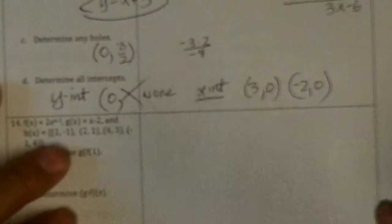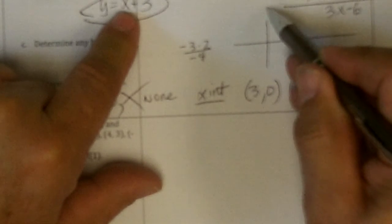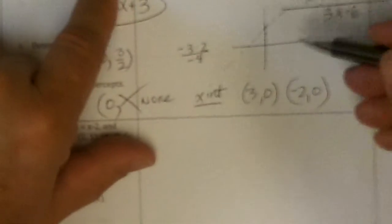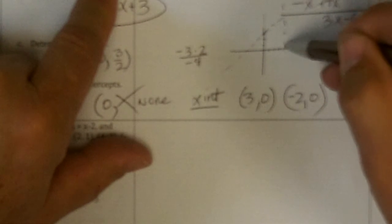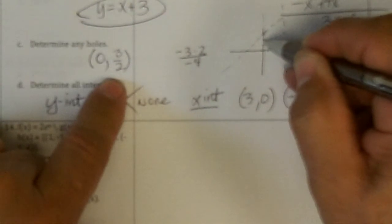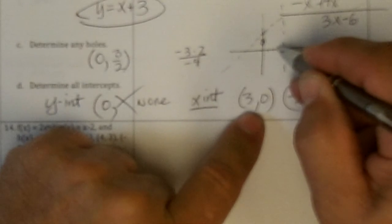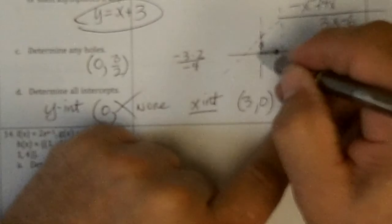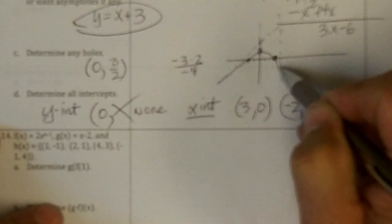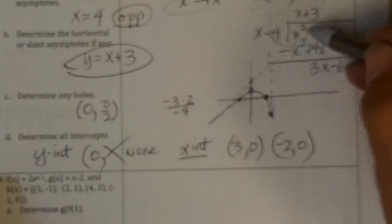Okay, now just in case I asked you to graph this, this would look like x plus 3, so it goes through plus 3, the slope of 1, vertical asymptote at 4, a hole at 0, 3 halves, and x-intercepts at 3 and at negative 2. So this must go, and it goes opposite, so there must be another part up here.